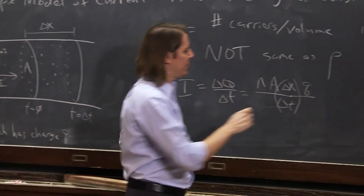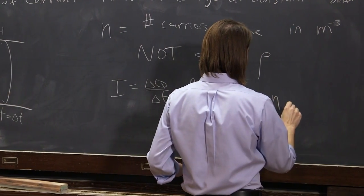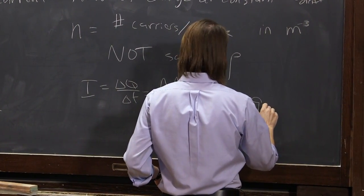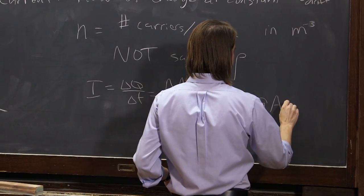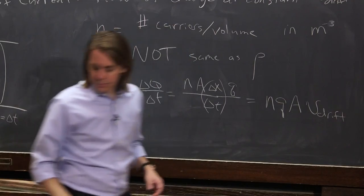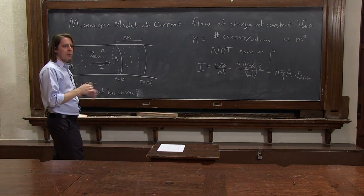So the microscopic model for charge is that it's n, which is the number, q, their charge, a, and v drift. So we're going to use that as we think more about charge.